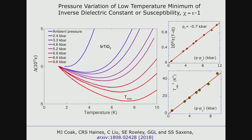This is the most thorough data yet collected on any of these types of problems. The most distinctive feature is that T_min — the temperature at the minimum — has its square as a linear function of the pressure difference from the critical pressure. So T_min² goes to zero at the critical pressure in the same way as the zero-temperature inverse susceptibility, meaning these two quantities are proportional to each other.